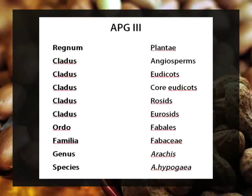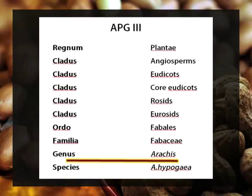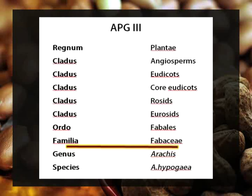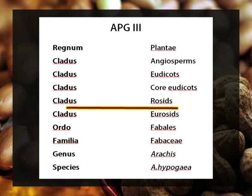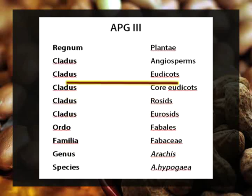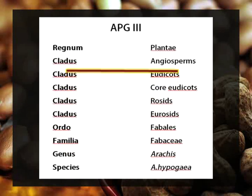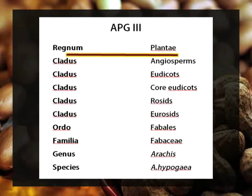The Angiosperm Phylogeny Group in their third classification placed Arachis hypogaea into genus Arachis, family Fabaceae, order Fabales, clade Eurosids, clade Rosids, then core Eudicots, then Eudicots, and finally into Angiosperms and kingdom Plantae.